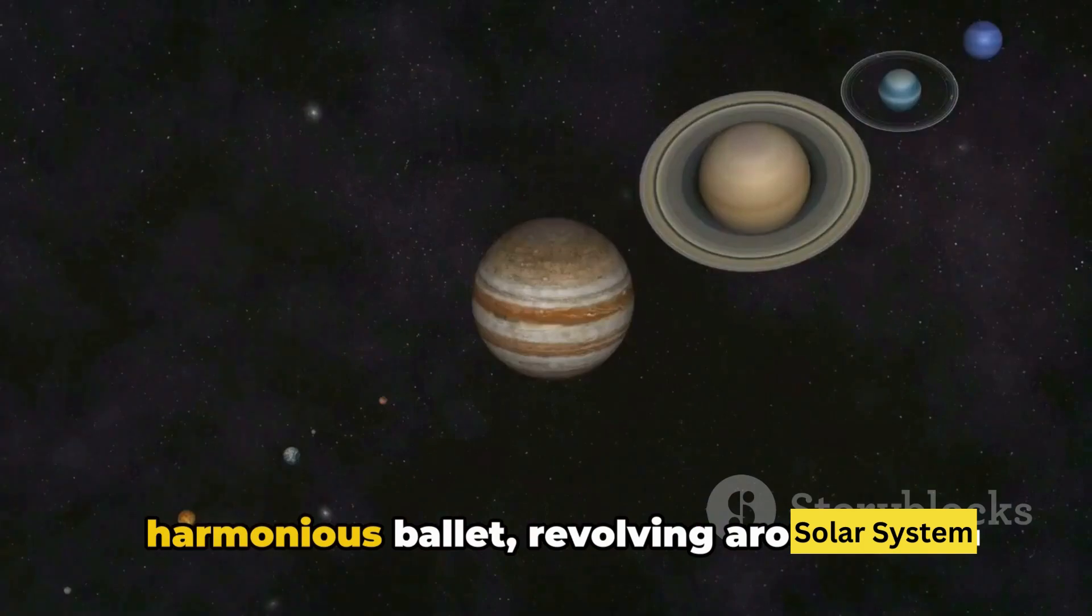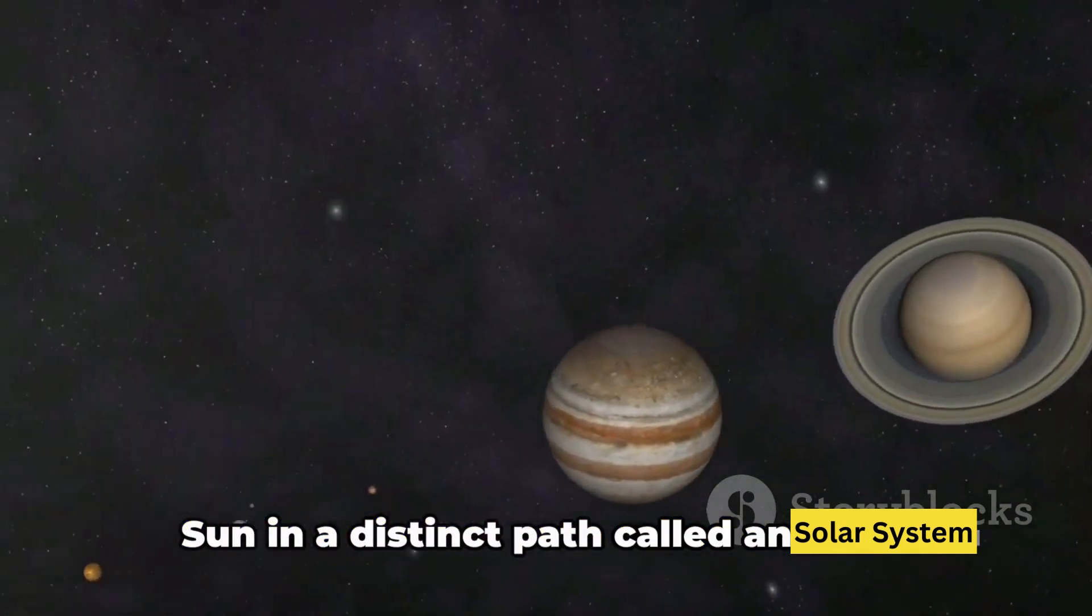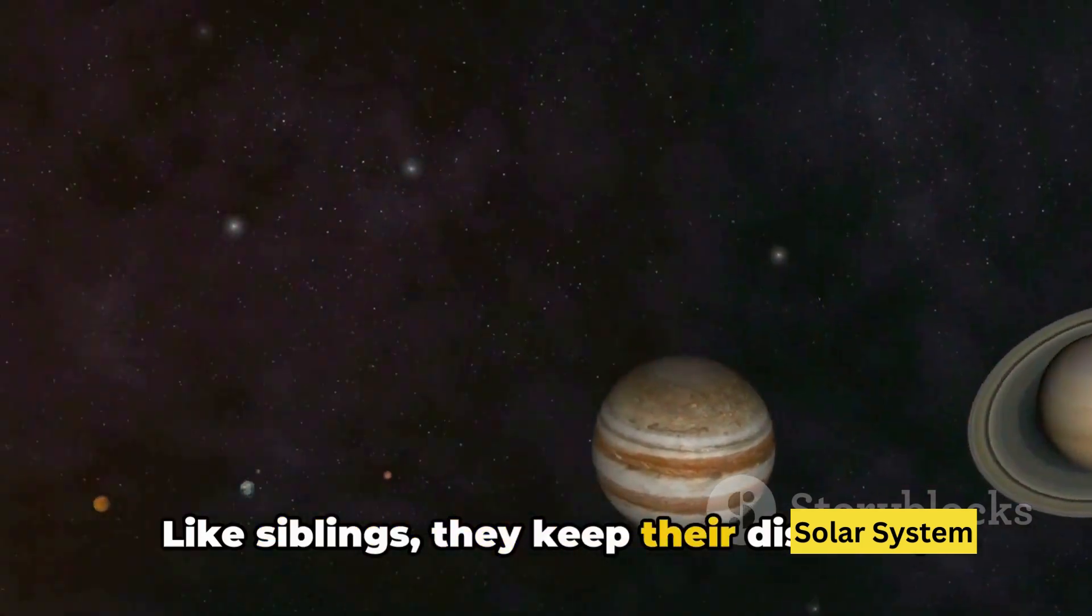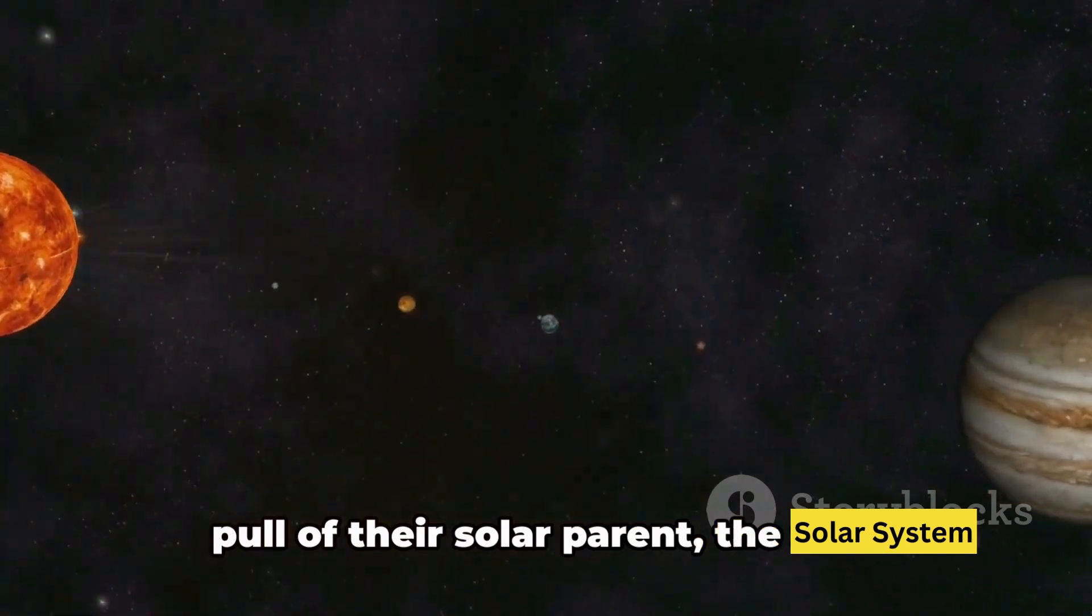Each of these planets dances in a harmonious ballet, revolving around the sun in a distinct path called an orbit. Like siblings, they keep their distance, yet remain connected by the gravitational pull of their solar parent, the sun.